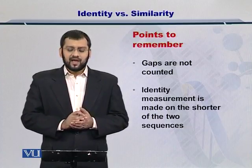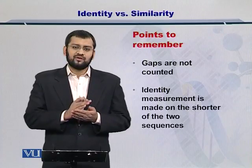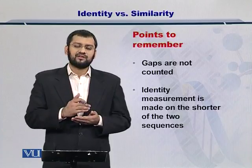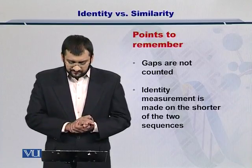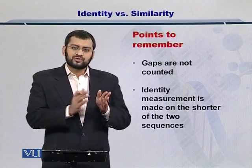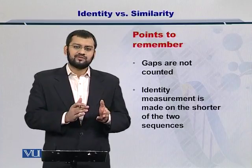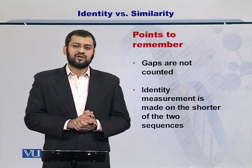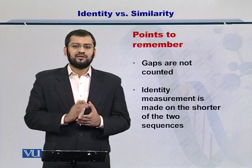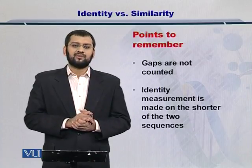There are important points to remember. Number one, gaps are not counted — if you have a gap in a sequence, it is not considered a match and is left out. Second, identity measurement is always made on the shorter sequence. As we saw in the previous example, the shorter sequence was five nucleotides long, so five is used as the smaller length. These two points are very important when computing identity between sequences.